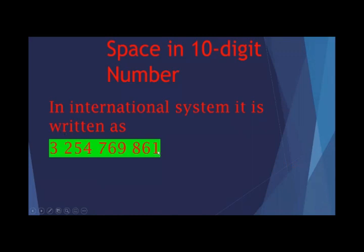The answer is: 1, 6, 8 — space — 6, 9, 7 — space — 4, 5, 2 — space. We place a space after every three digits from the right: 1, 2, 3 — space; 1, 2, 3 — space; 1, 2, 3 — space. The reason we place a space after every three digits is that each family has three digits, so we place a space after every family.